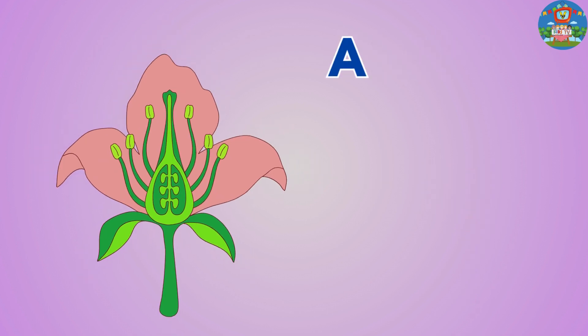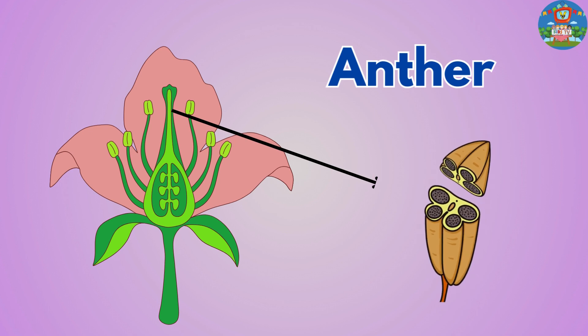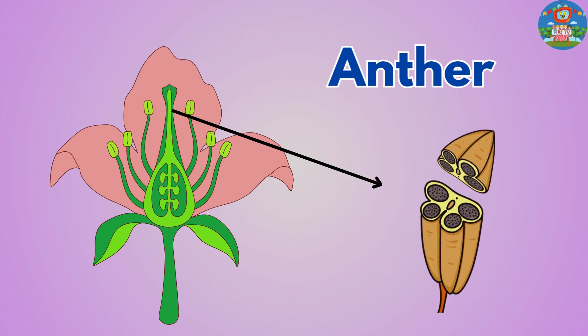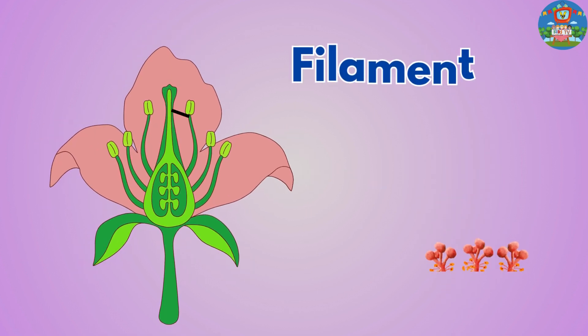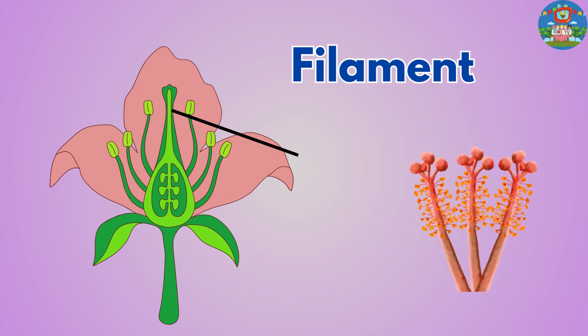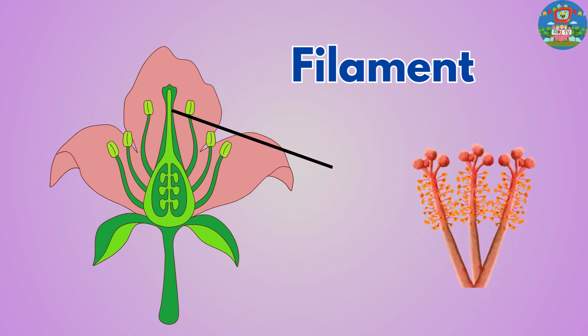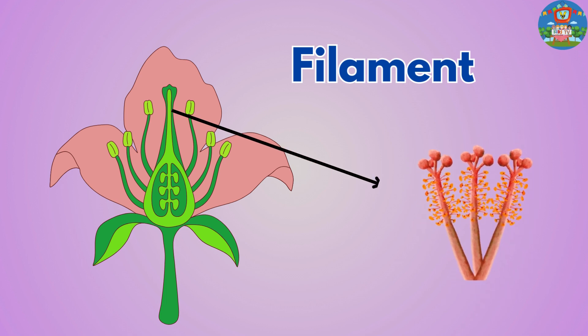Anther. The anther is the part of the stamen that produces and releases pollen grains. Filament. The filament is the thin stalk that holds the anther out, allowing it to release pollen into the air.